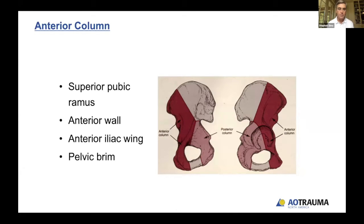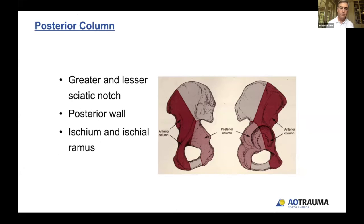The anterior column includes the superior pubic ramus, the anterior wall, the anterior iliac brim, and covers the pelvic brim on the inside portion of the pelvis. The posterior column is made up of the greater and lesser sciatic notches, the posterior wall, and the ischium and ischial ramus.